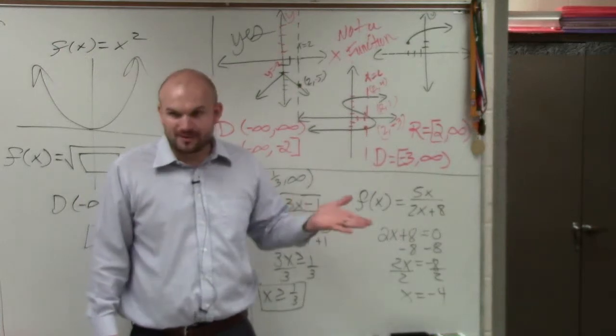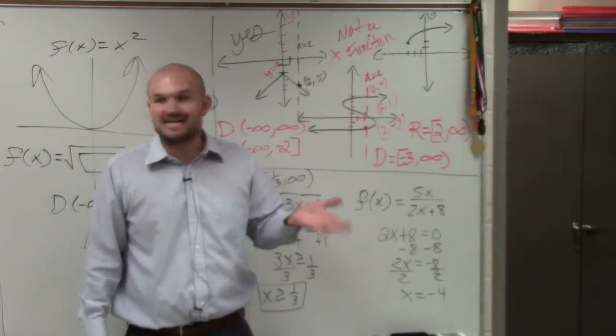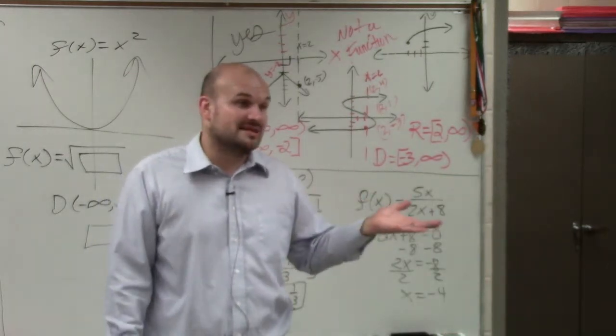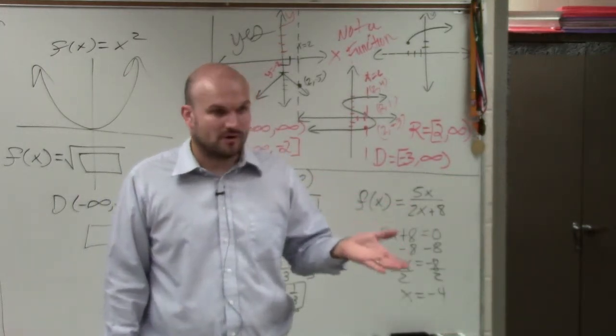Every number is in the domain except the one number that makes my denominator 0, which is negative 4. So if you don't know how to write it in interval notation and you're gasping for air like, I know what it is, I just don't know how to write it, you could always say all real numbers except for negative 4.